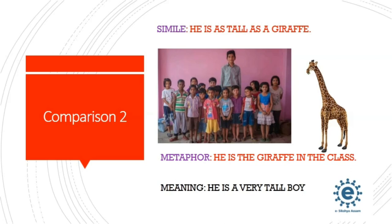These are the examples of simile and metaphor. Remember, the comparison is always made between two different things — not between similar things. In simile we use 'as' or 'like', and in metaphor we do not use 'as' or 'like'.